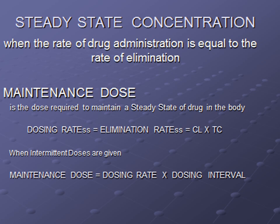For example, if you start with 100 ml of drug, after one half-life 50 ml is excreted, leaving 50 ml. After another half-life, 50% of the remaining 50 ml is eliminated, leaving 25 ml — and so on, with a constant proportion eliminated each half-life.